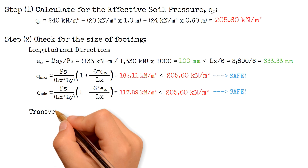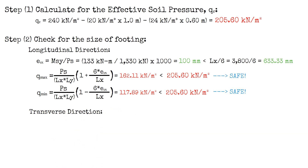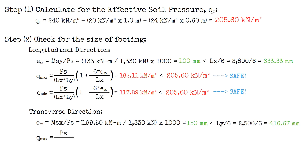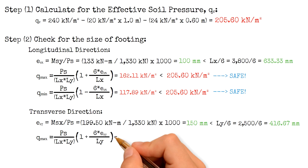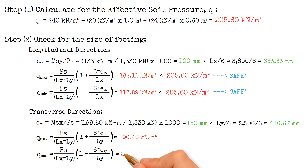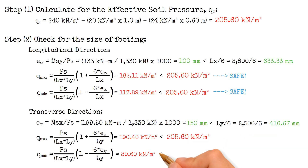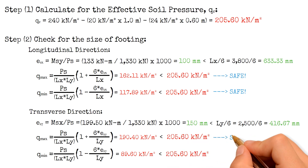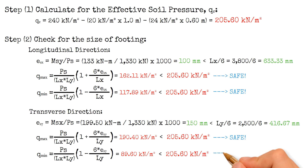Doing the same process for the transverse direction, we get Q_max equals 190.4 kN per m² and Q_min equals 89.6 kN per m². Both values are less than the effective soil pressure Q_E, so the dimensions are also safe along the transverse direction.